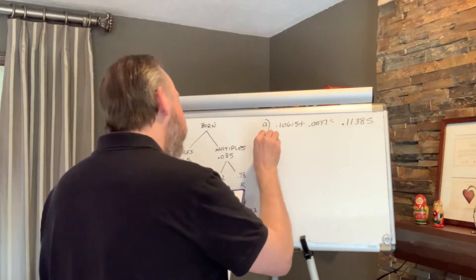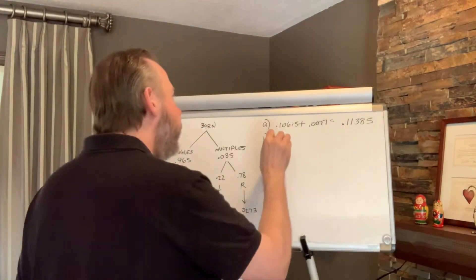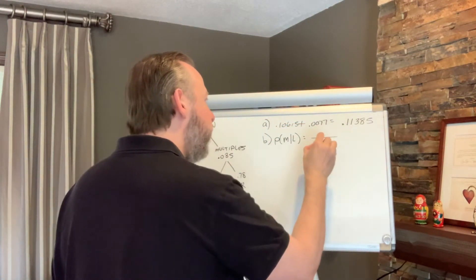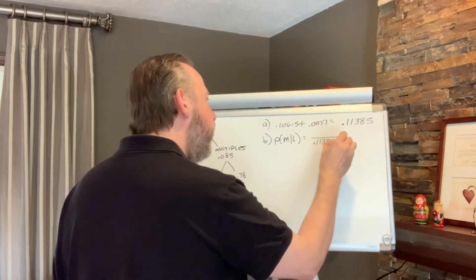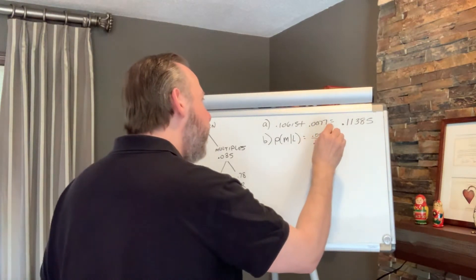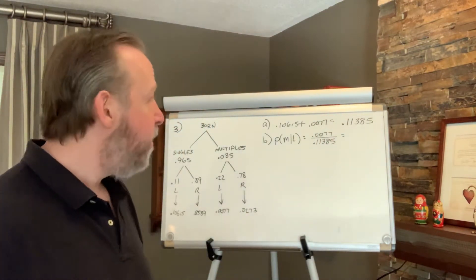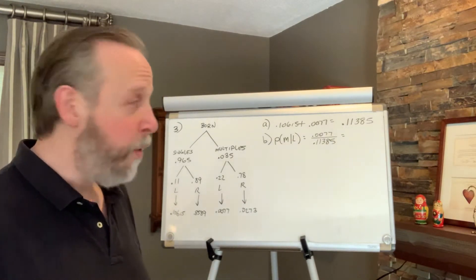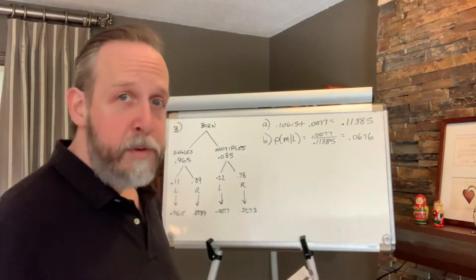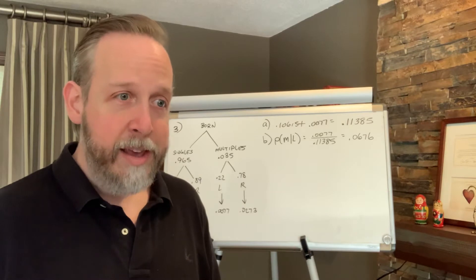Part B asked us to find the probability of finding a multiple birth person given we found a lefty — the probability of a multiple given the person is left-handed. We know the probability of finding a left-handed person is 0.11385. The probability of that person having been from a multiple birth was 0.0077. So multiple birth given left-handedness is 0.0077 divided by 0.11385, which equals 0.0676. Given that a person is left-handed, there's a 6.76% chance that person is a multiple birth.